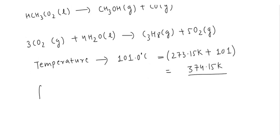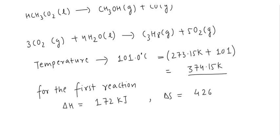If we see for the first reaction then we have been given that ΔH for this reaction is 172 kJ. ΔS that is the entropy change it is 426 J Kelvin inverse and we have been asked about the ΔG.